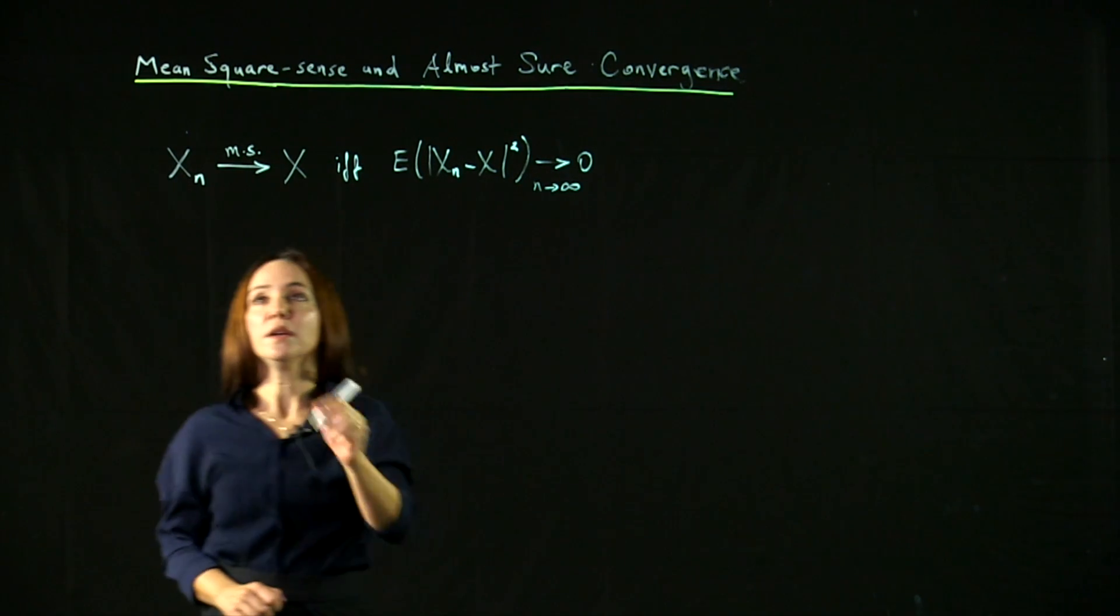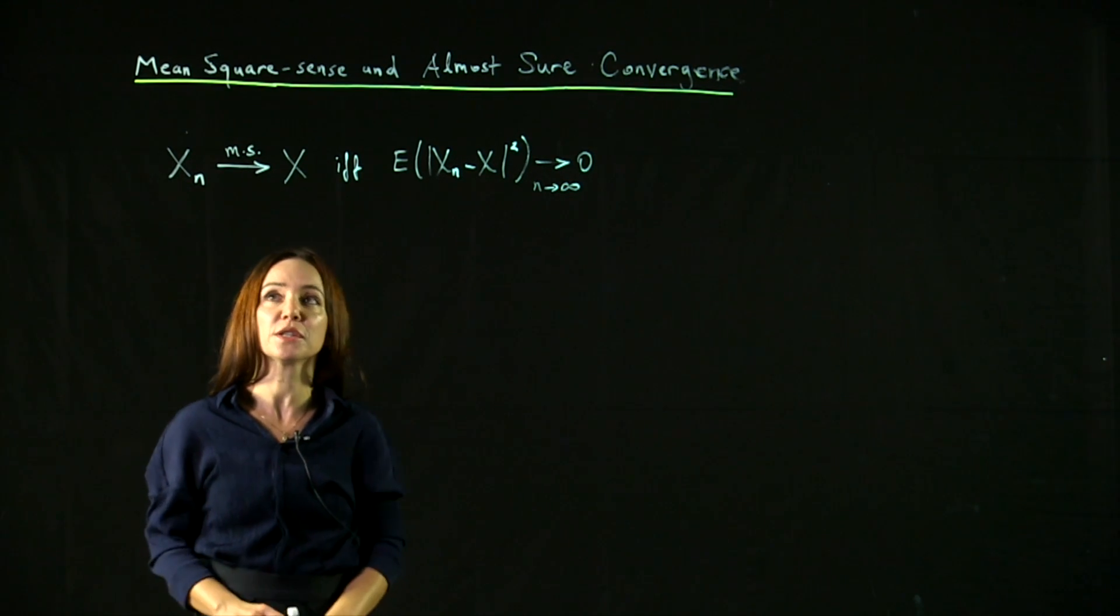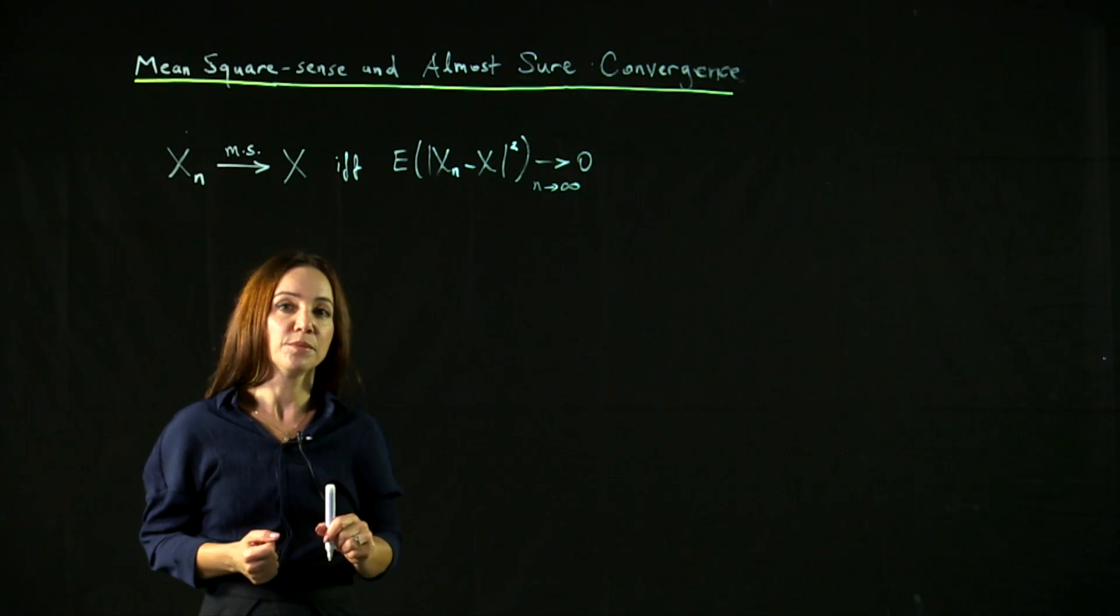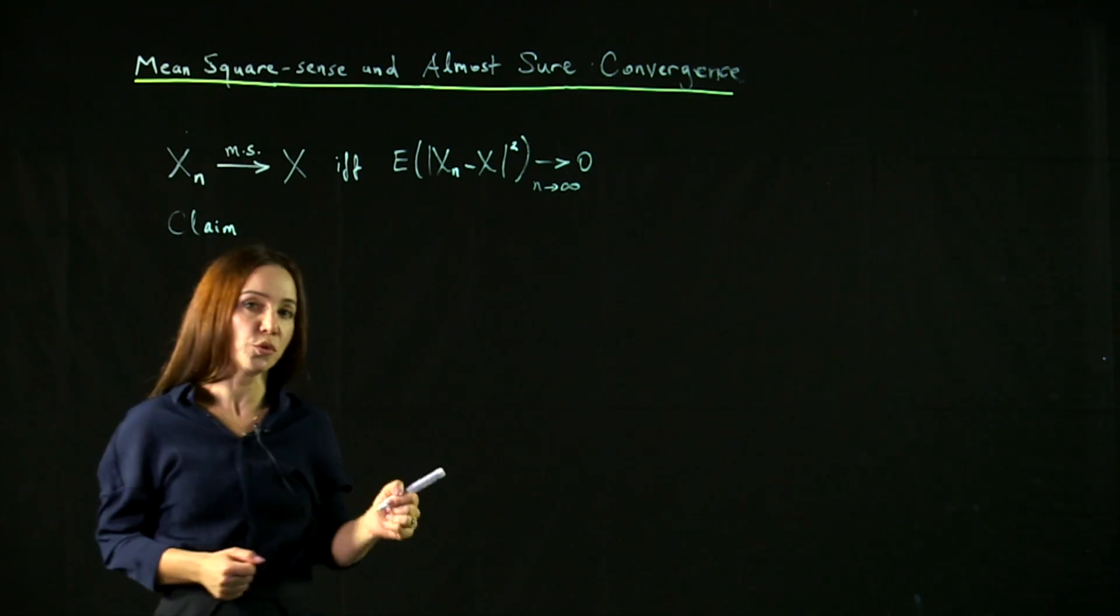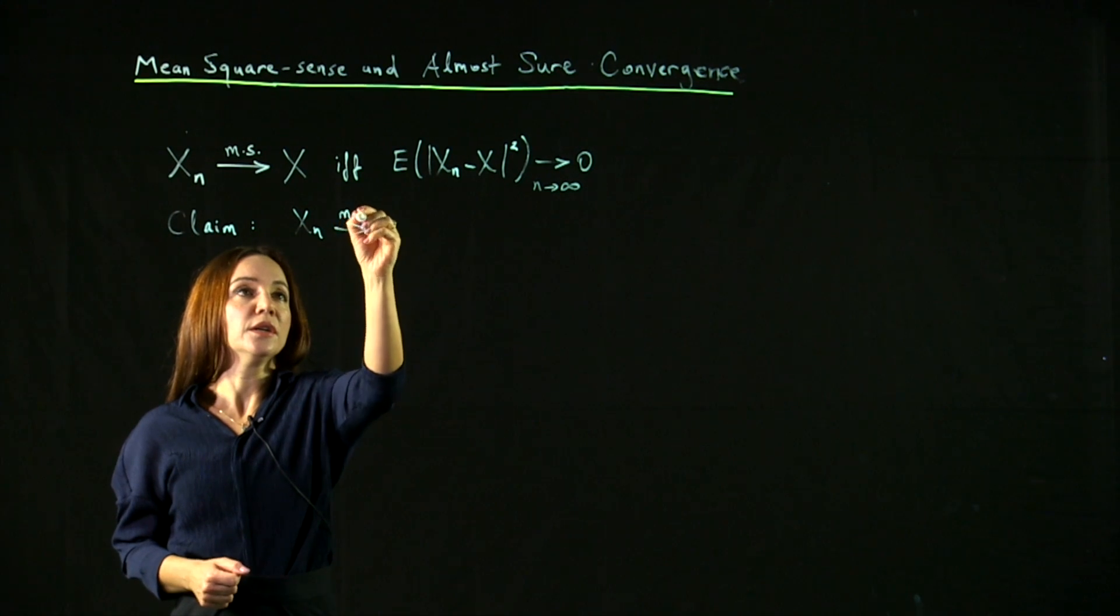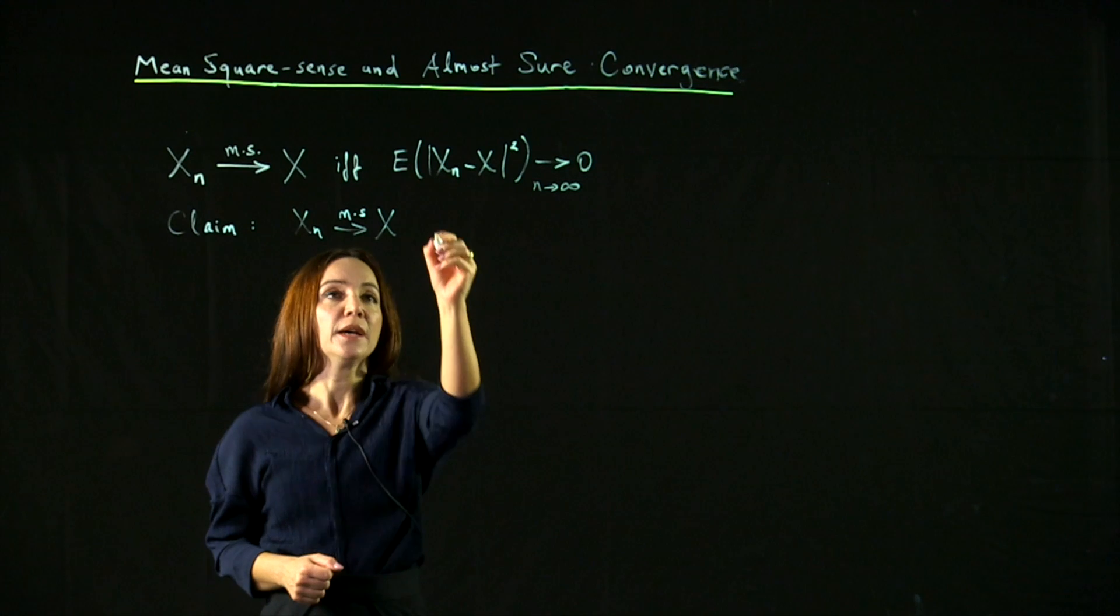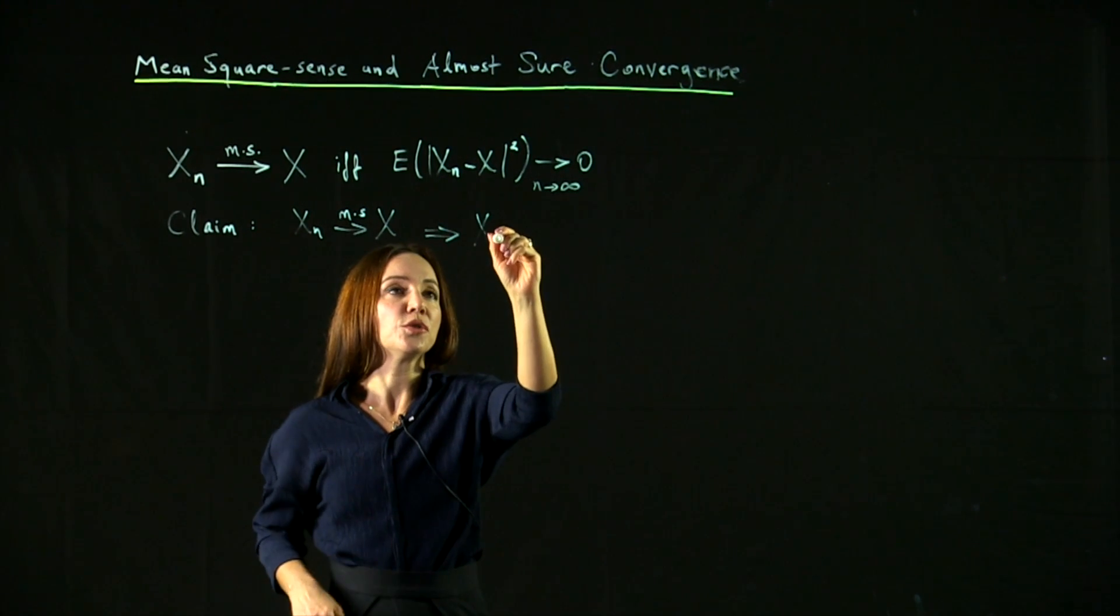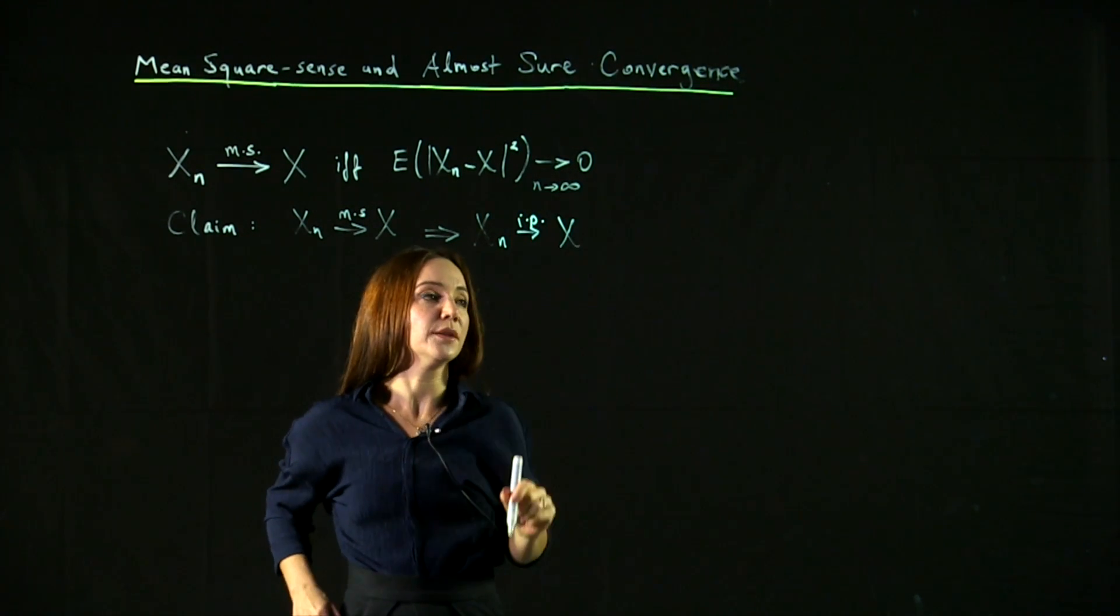This is a quite strong notion of convergence. Previously, we've introduced in probability convergence. The claim that we can quickly prove is that if a sequence converges in the mean square error sense to a random variable x, this implies that the sequence converges in probability to the same random variable x.